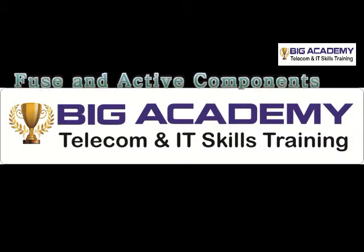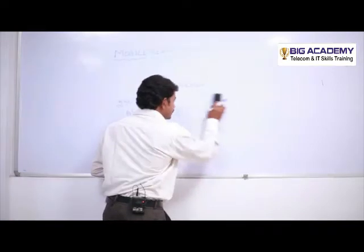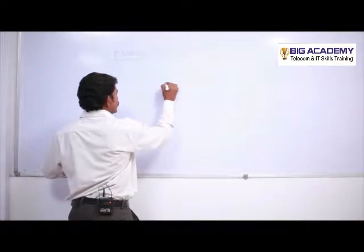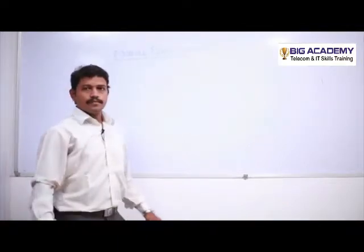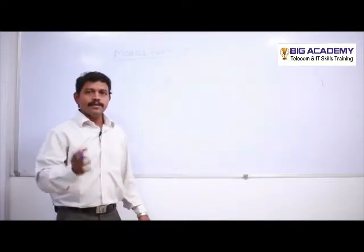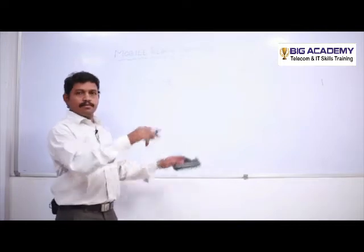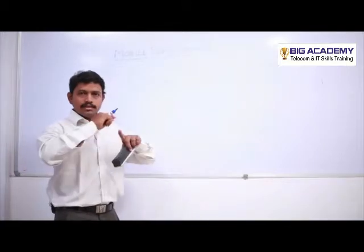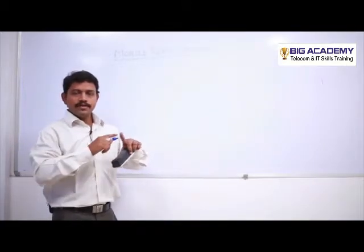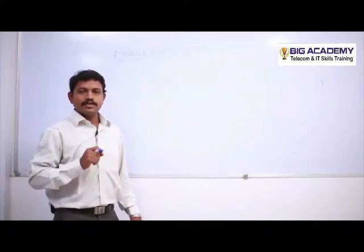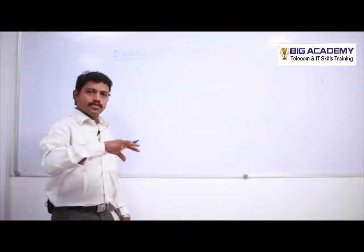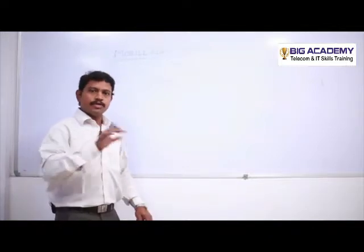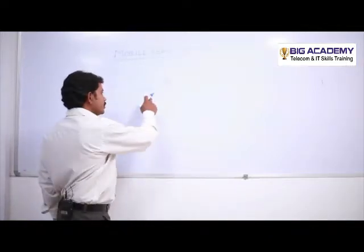Next we'll see about the fuse and active components. Everybody has some knowledge about fuses — in every home there is a main power box with a fuse carrier, where we tie a small string between two points. That is called the fuse. When voltage comes into your residence and exceeds the limit, the fuse burns itself and protects your devices. That's why we use a fuse.